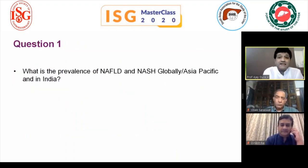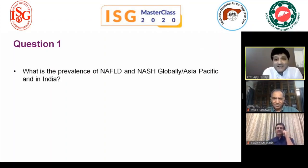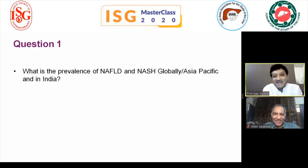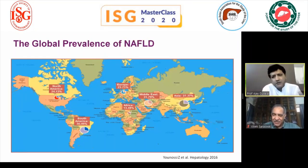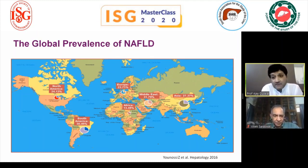Regarding epidemiology, residents need to know three key studies. The first is a meta-analytic study by Zobair Younossi, looking at global prevalence. Overall global prevalence of fatty liver disease was given as around 25 percent, with the highest rates in the Middle East and South America, but Asia is not far behind.